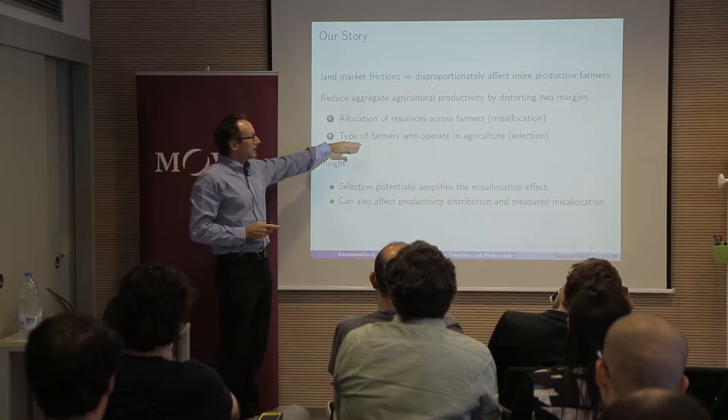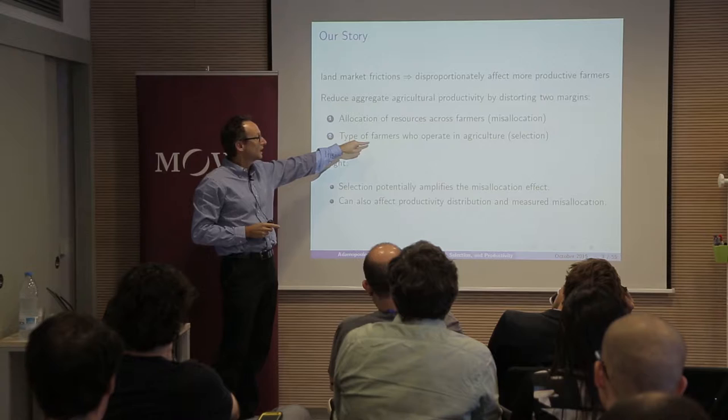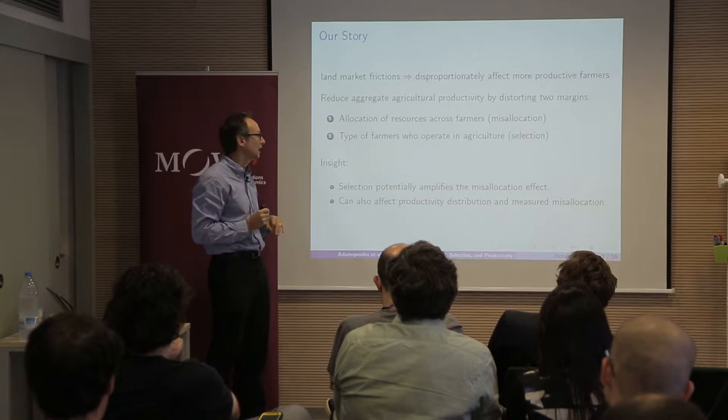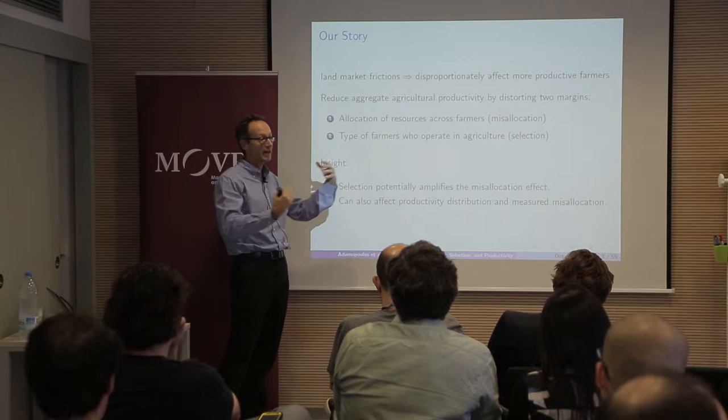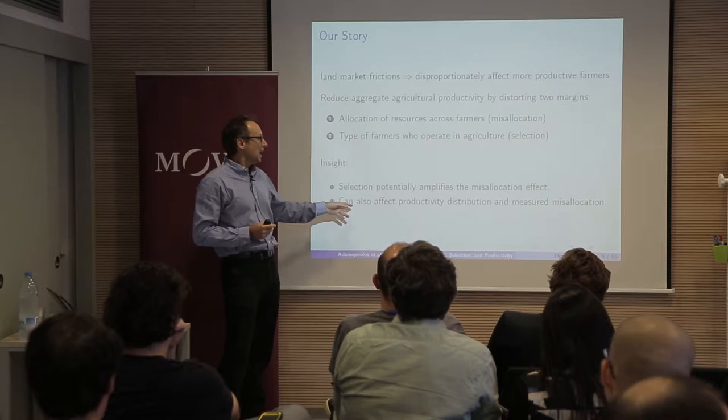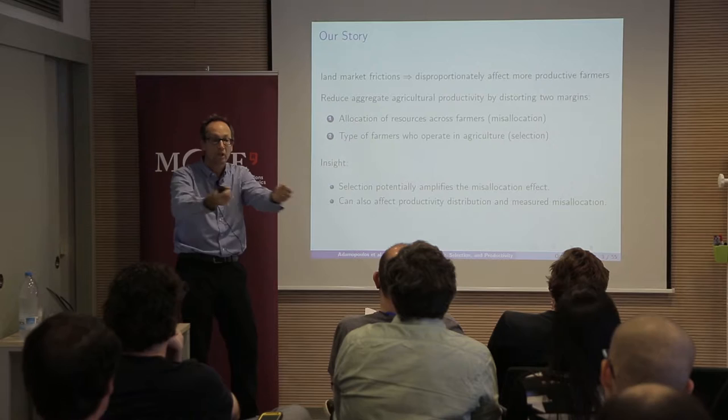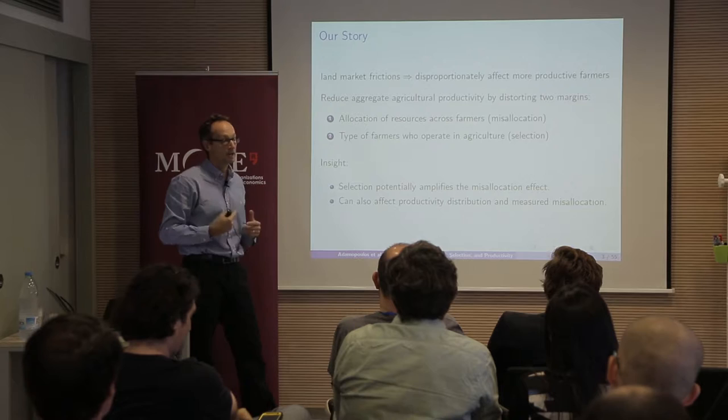The other channel is that these distortions would also affect the type of farmers that operate in agriculture — this is going to generate some selection. Selection is going to act as an amplification effect of misallocation on aggregate productivity. It's also going to affect the productivity distribution of production units we see in the sector, and therefore affect how we measure misallocation in the first place.